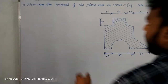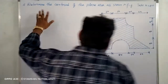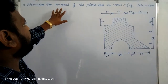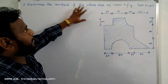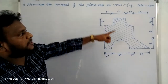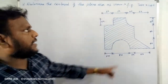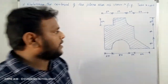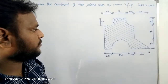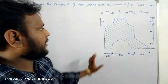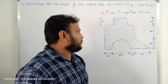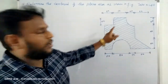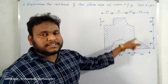Find the centroid of the plane area as shown in the figure. Take x equal to 40. The key task is to find the centroid, looking at the hatching shown.